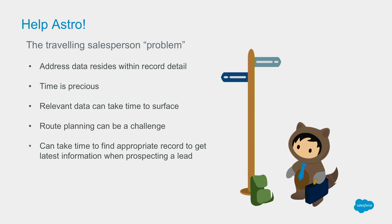Just to quickly recap on the traveling salesperson problem — these are quite familiar to those involved in sales. In Salesforce, address detail is within those individual records, and time is precious so relevant data takes time to surface. Salespeople have to go into individual records, inspect addresses, and try to work out the most effective route to prospect leads, follow up on leads, etc. Route planning can be a bit of a challenge, and it can take time to find the appropriate record to get the latest information when prospecting individual leads.